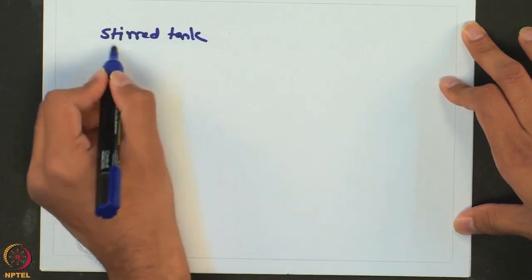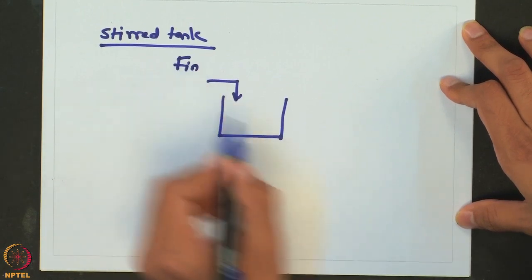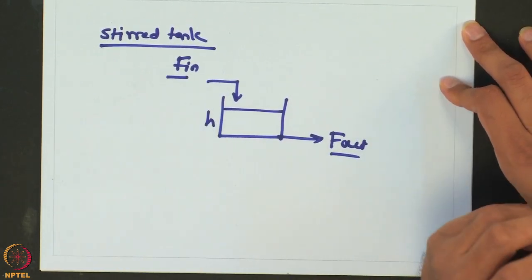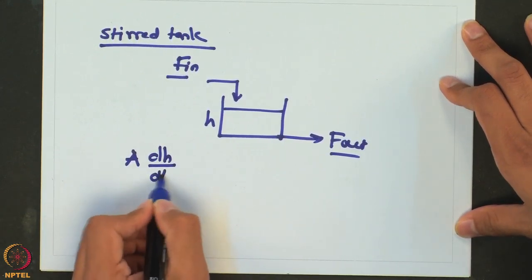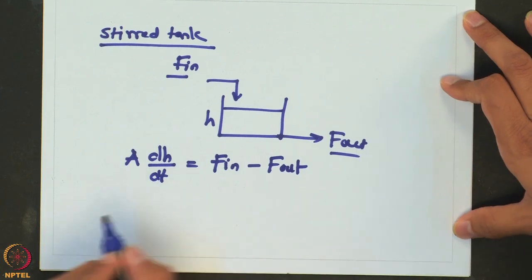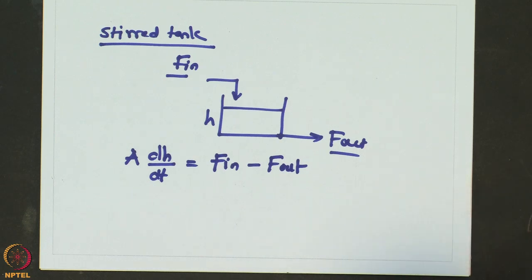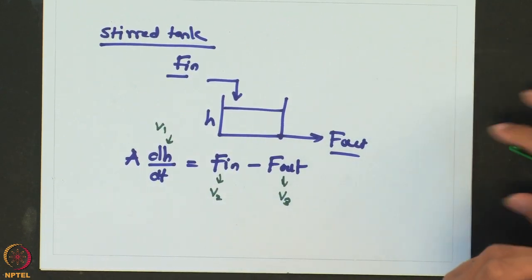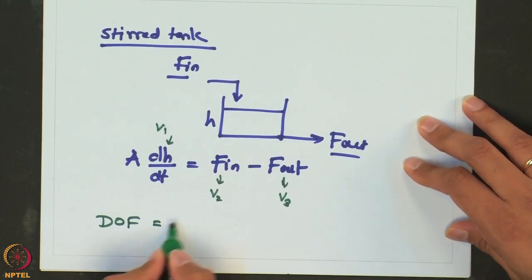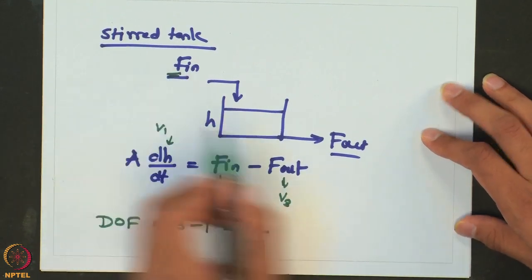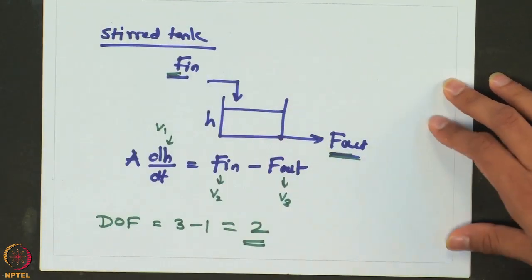Consider the example of a stirred tank with some input and output. There is a level H in the tank, and the dynamic equation is A·dH/dt = F_in − F_out. For this system, we have three variables: H, F_in, and F_out, and only one equation. So the degree of freedom is 3 − 1 = 2. There are two independent specifications we can make, which are F_in and F_out. As long as we specify F_in and F_out, the rest of the system gets specified.